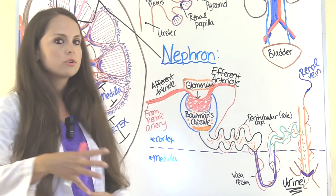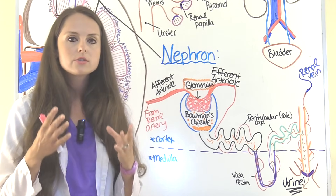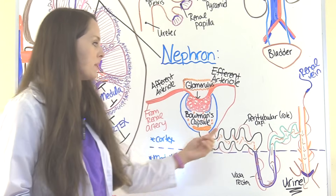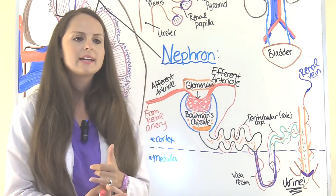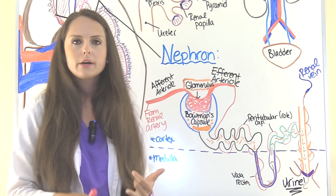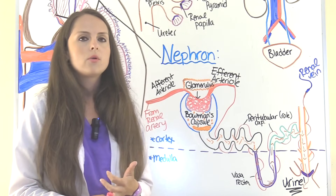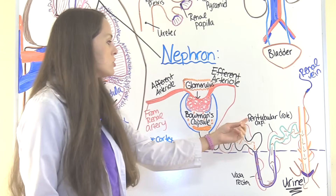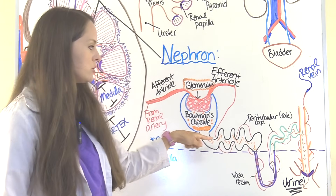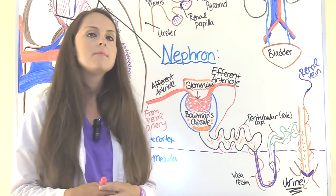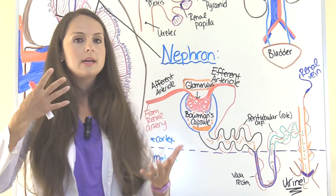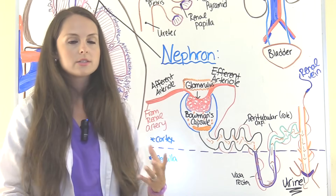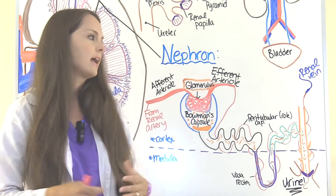Now let's talk about secretion. The peritubular capillaries help here as well — these capillaries will carry waste like urea, creatinine, or any drugs you've taken like antibiotics or diuretics, and will secrete those substances into the filtrate. They will then be transported out and excreted as urine. That's how those two processes — reabsorption and secretion — go hand in hand.